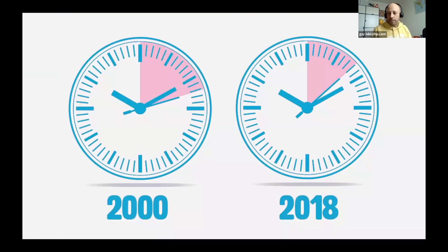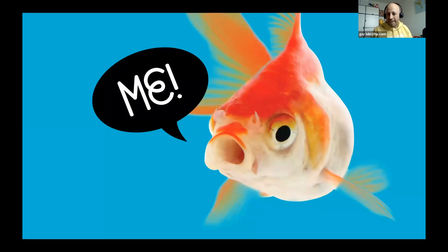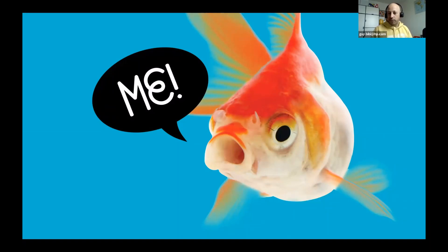If we look at the attention span of people, our attention span is declining. In the year 2000, we had 12 seconds of attention span; in 2018, only eight seconds. A goldfish has nine seconds of attention span — better than a human. In these eight seconds, we need to do three things: tell the customer to look at the product, make them understand they need it, and most importantly, make them take action and pick it up.